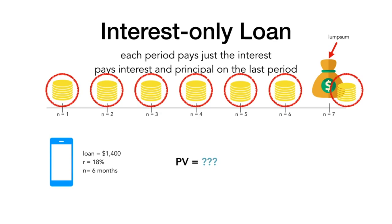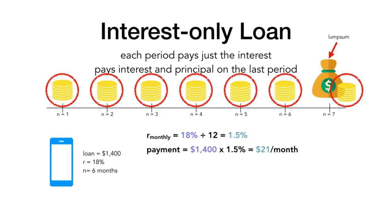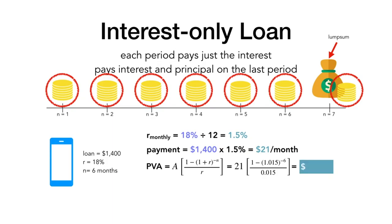First, let's calculate the interest payments using the monthly interest rate. We know the annual interest rate is 18%, and so the monthly rate is 1.5%, or 18% divided by 12 months. $1,400 times 1.5% equals $21 a month for six months. Since it's the same payment each period, this is an annuity and we can use the present value of an annuity formula. We use the present value annuity formula to calculate the present value of the interest payments to be $119.64.